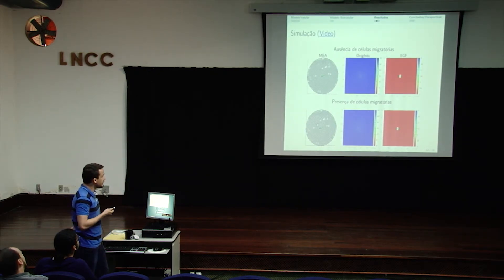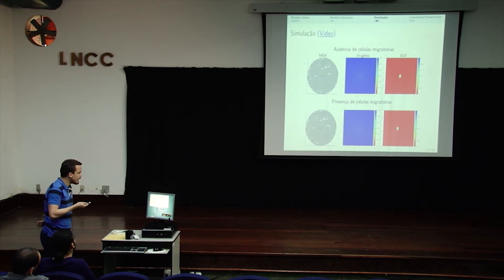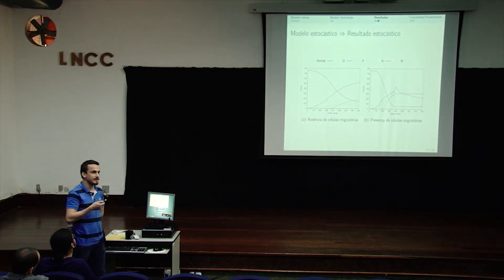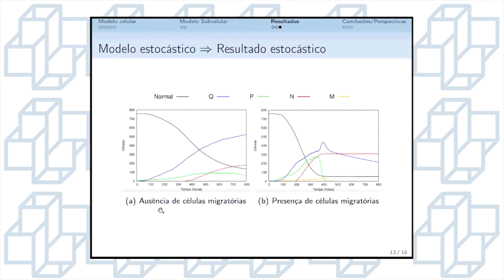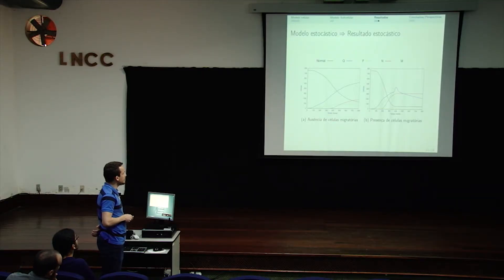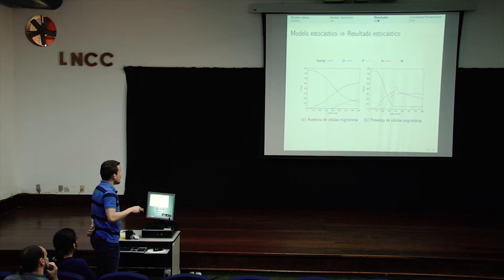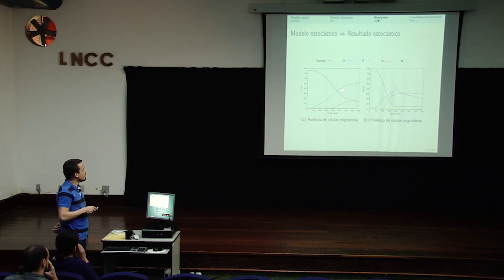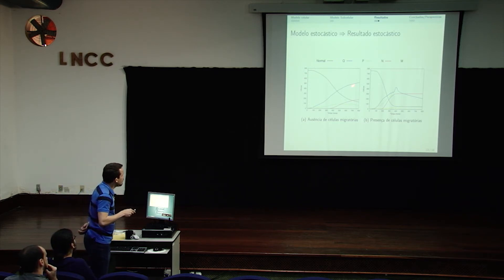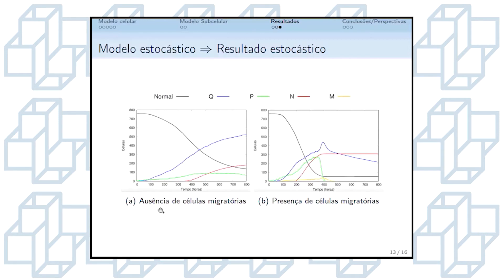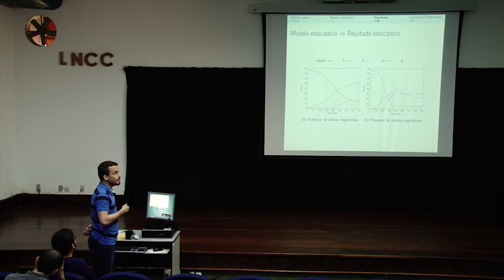Nosso modelo é estocástico e isso é apenas uma simulação. Para obtermos um resultado coerente, nós fizemos 100 simulações para cada cenário e realmente obtivemos o que foi visto na simulação. Com a presença das células migratórias, o crescimento das células tumorais é muito mais rápido e atinge um platô rapidamente. Com a ausência das células migratórias, o crescimento é muito mais suave e o platô ainda não é atingido. Esse platô se dá devido à nossa hipótese de restringir as tensões de compressão e a disponibilidade do meio.